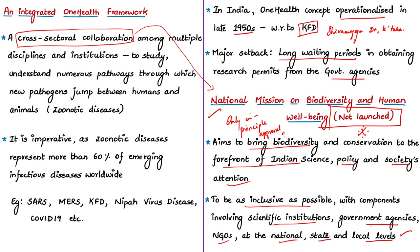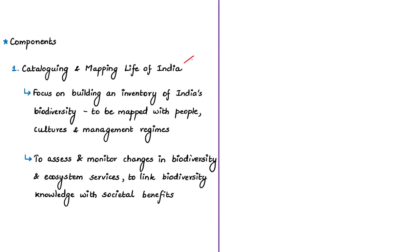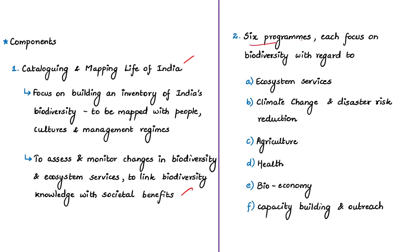The mission has two main components. The first is titled 'Cataloguing and Mapping Life of India Program,' which will build an inventory of India's biodiversity, map biodiversity with people, cultures and management regimes, assess and monitor changes in biodiversity and ecosystem services, and link biodiversity knowledge with societal benefits. The second component is divided into six programs focusing on biodiversity in relation to six specific areas. Overall the mission aims to utilize biodiversity to ensure well-being and prosperity of human beings.